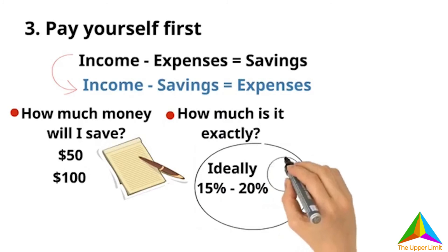But relax, if this amount is impossible for you to realize, you do smaller amount and increase it gradually. You can start from 3% or 5% of what you earn.